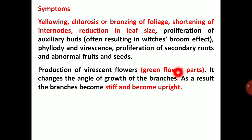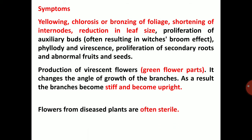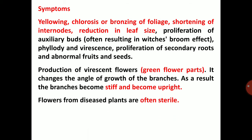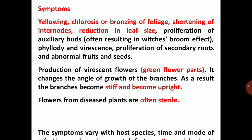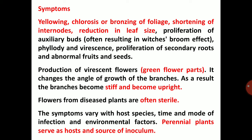There is proliferation of secondary roots and abnormal fruits and seeds. The infection changes the angle of growth of branches, making branches stiff and upright. Flowers from diseased plants are often sterile. The symptoms vary with host species, time and mode of infection, and environmental factors. Perennial plants serve as host and source of inoculum.